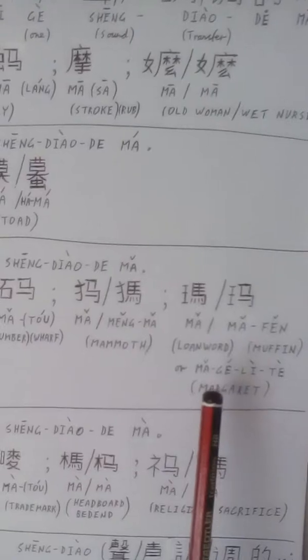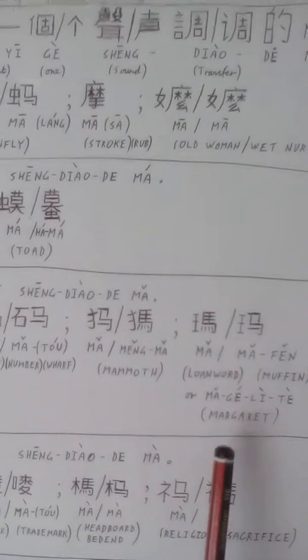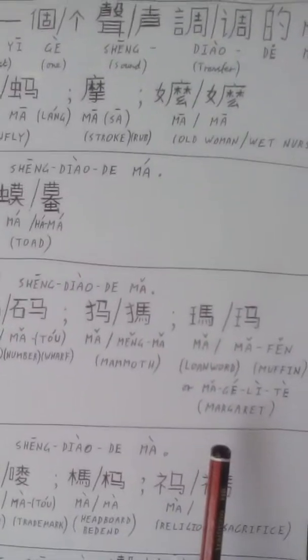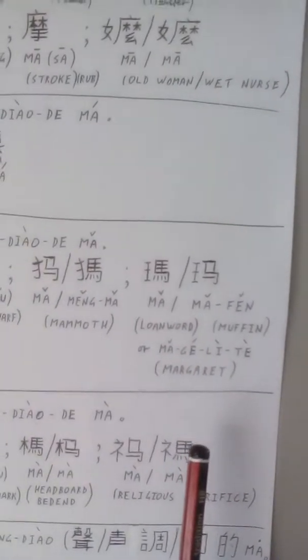Then 马 can be a loan word, for example, 马芬, muffin, or 马格丽特, 马可特, margarita cocktail.